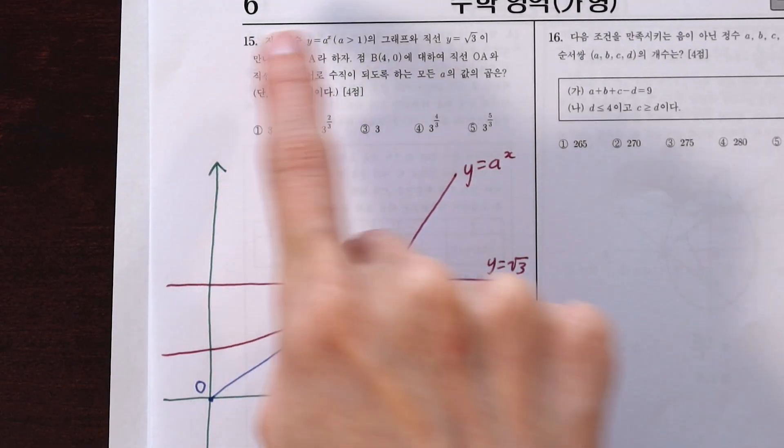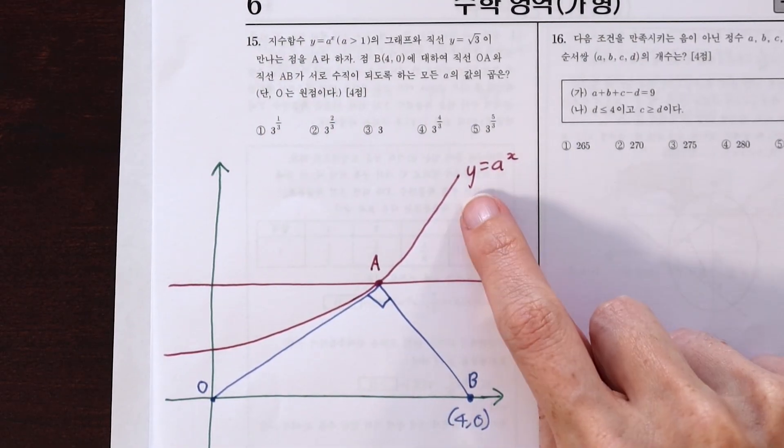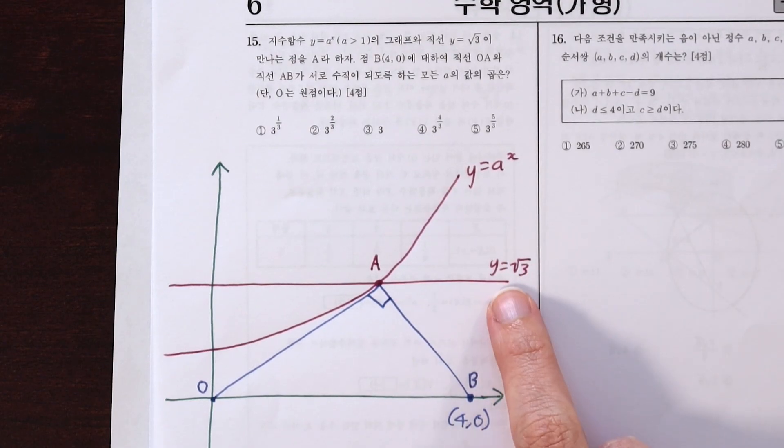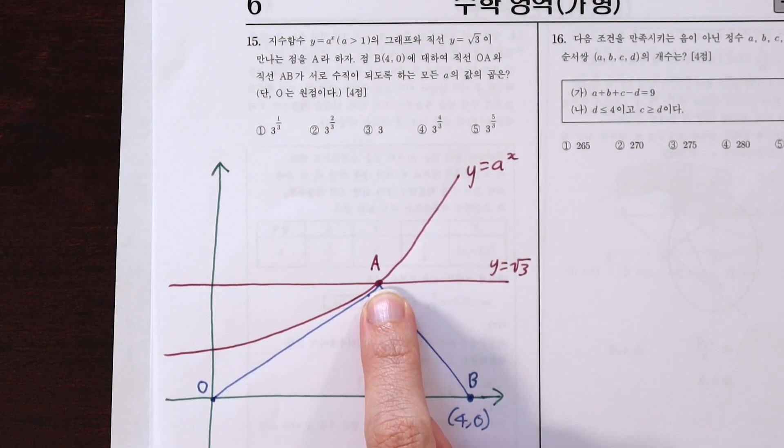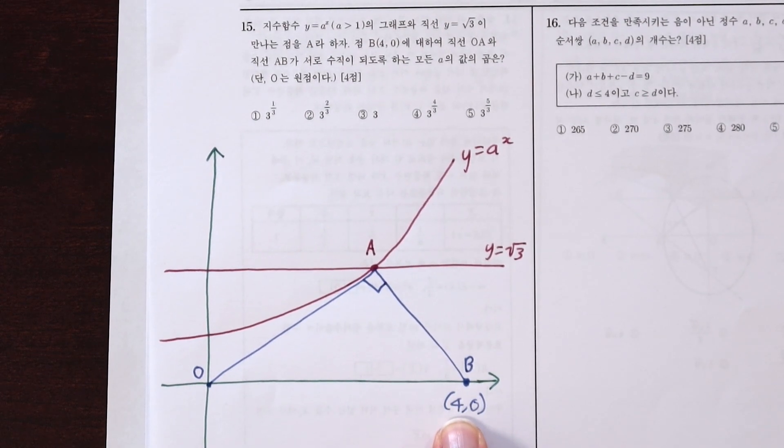For question 15 we are told that two functions y equals a to the x and y equals root 3 meet at the point a. There's also this point b which is at four zero.